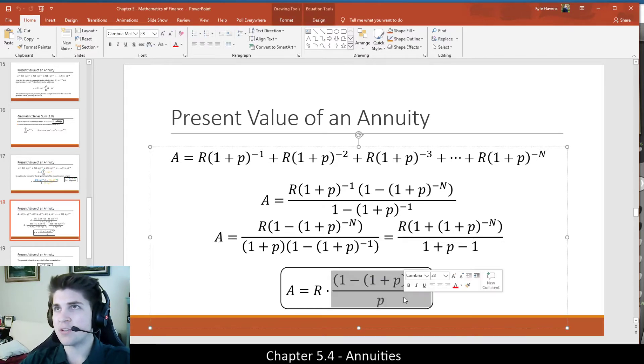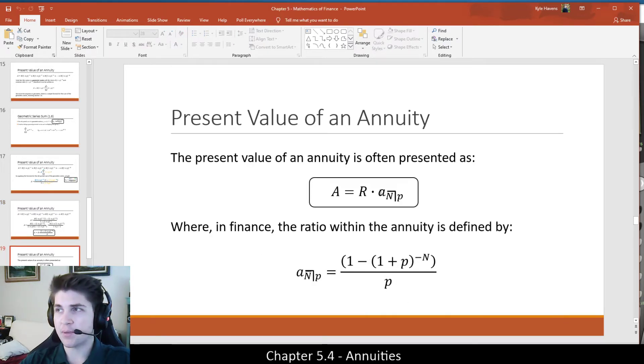But basically, the thing I wanted to mention is that this quantity right here is denoted often in finance books given to be the ratio within the annuity. So basically, A sub n bar p, I don't even know what you call this, but it's basically a multivariate function, which is a shorthand for the ratio within the annuity given the number of periods and the periodic interest rate.